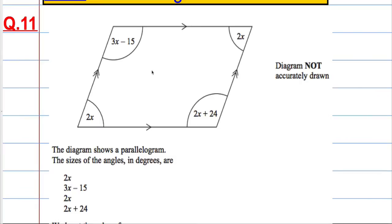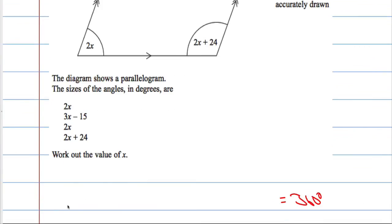So in other words if I add up all of these angles I should get 360 degrees. I am going to form a little equation. 2x plus 3x minus 15. So we got that one and that one. Plus another 2x plus 2x plus 24. Plus 24 must equal 360 degrees.